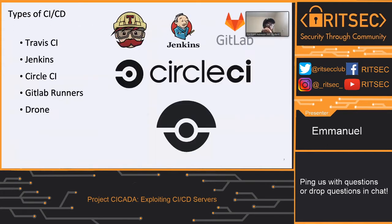There are multiple types of CI servers out there. There's Travis CI, which most of us are used to. There's Jenkins, which I haven't touched much but is also popular. There's CircleCI and the GitLab runner, which is GitLab's equivalent of Travis — just a different name. And there's Drone.